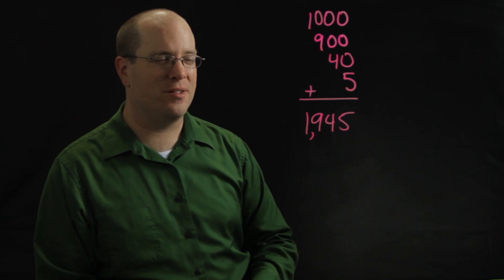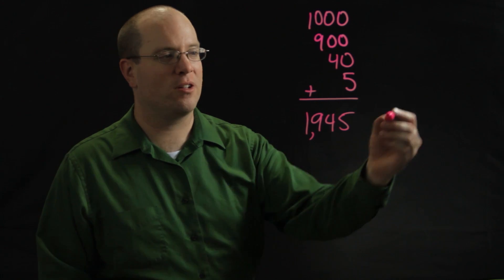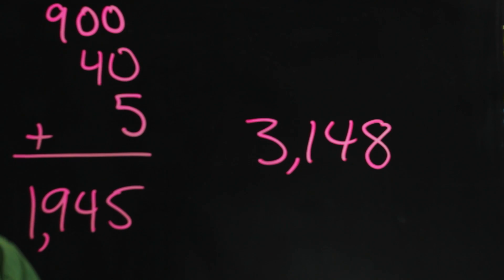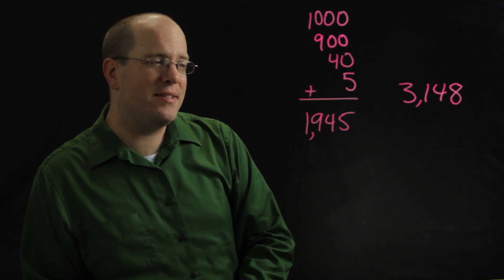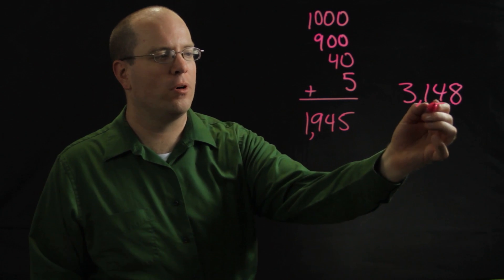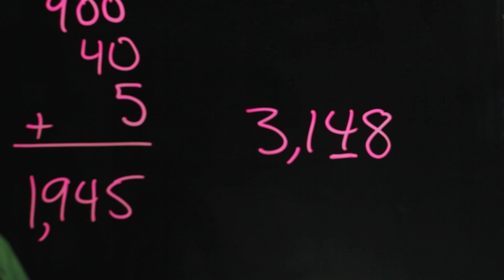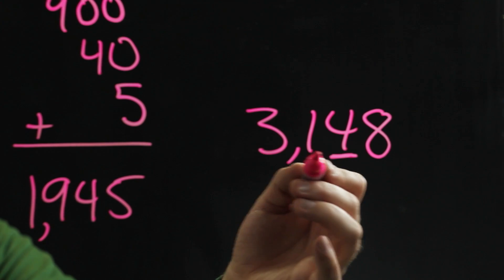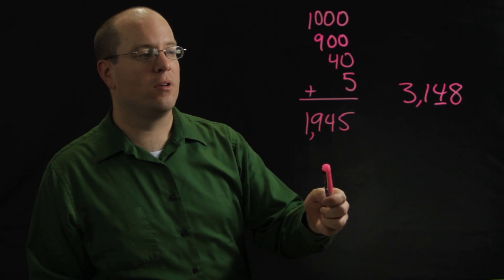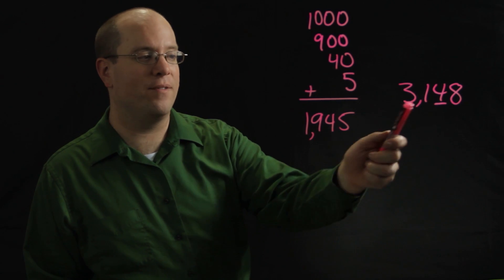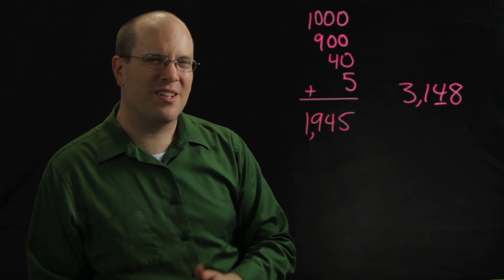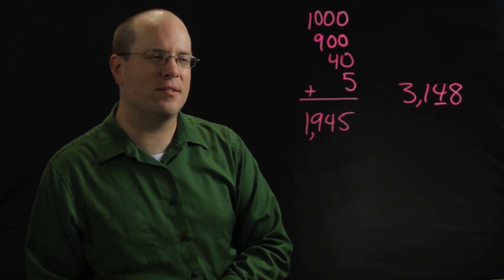The next step you can go with this is introduce another number — say another class had 3,148 — and you can ask that class well, how many tens did they have? How many of these did they have? They'll figure out that they had four. Some students might even say well they had 314 of them before they combined them. You can also ask questions like how many more hundreds did we have than they did? It lends itself really well to addition and subtraction later on, and it gives them a good understanding of the place value system, the base 10 system.